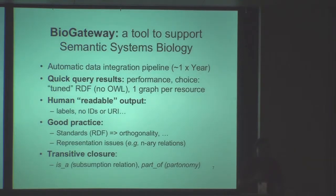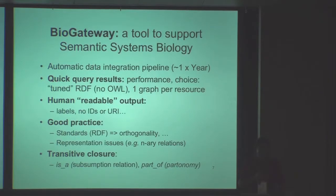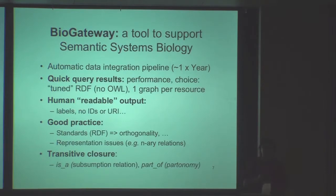BioGateway aims to support semantic systems biology — the full cycle from biological knowledge to hypothesis generation. This pipeline is run once a year, sometimes twice a year to generate all this information. We have spent a lot of effort tuning our RDF. Originally we were just importing data without focusing much on quality of modeling, but after performance issues we realized we had to remodel some pieces of RDF representation to get faster replies from our system.